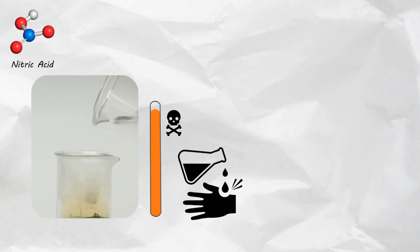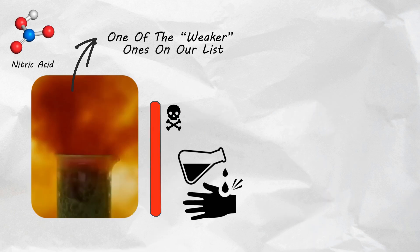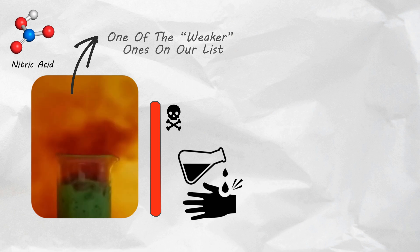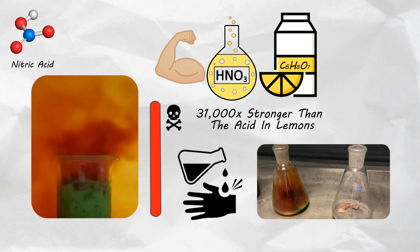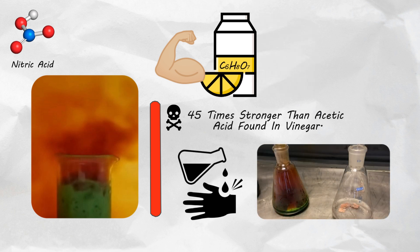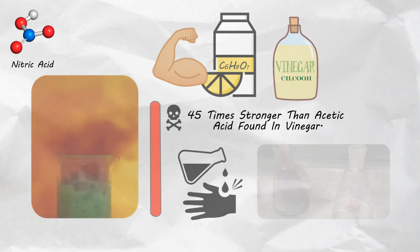Nitric acid, this highly corrosive mineral acid, is one of the weaker ones on our list, but still, it's around 31,000 times stronger than citric acid found in lemons in terms of acidity. For reference, citric acid is around 45 times stronger than acetic acid found in vinegar.